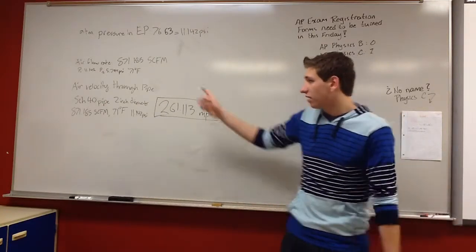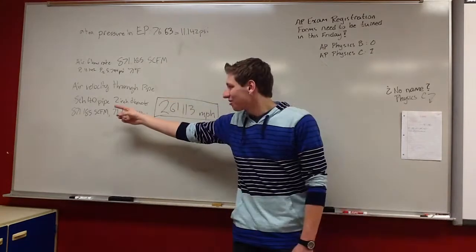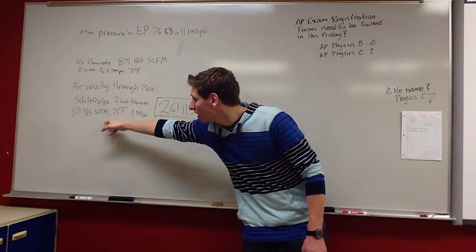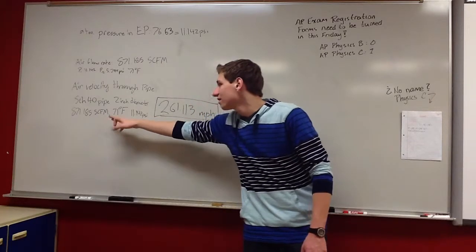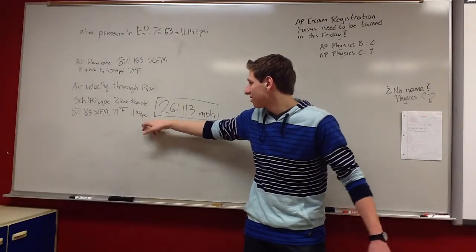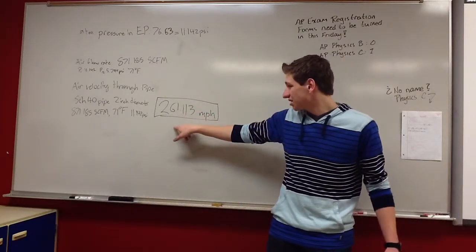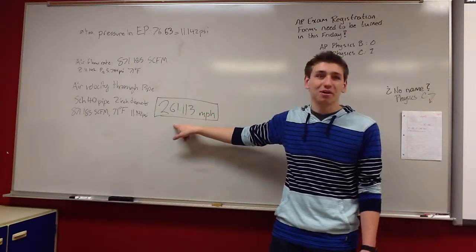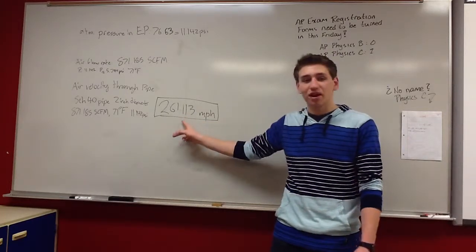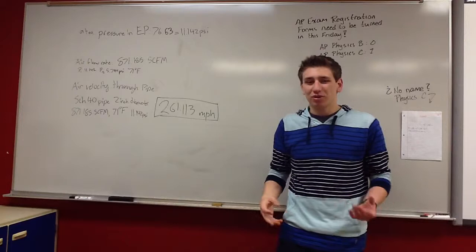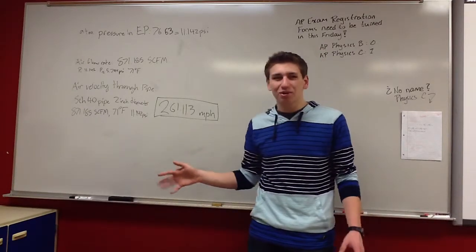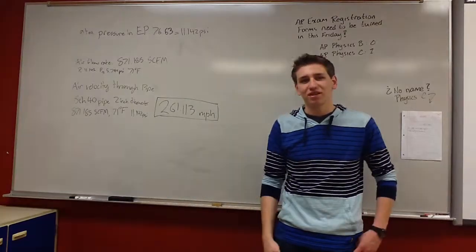Then once I knew that, I could calculate the air velocity through the piping. So schedule 40 piping, 2 inch diameter, 871.185 standard cubic feet per minute at 71 degrees Fahrenheit at 11.142 psi calculates out to 261.113 miles per hour. Now that isn't the exact speed that the ping pong ball is traveling. This is just the rate at which air travels through the pipe. So because it's not a perfect seal with the barrel, we know that the ping pong ball is going somewhere in the neighborhood of 220 to 230 miles an hour.